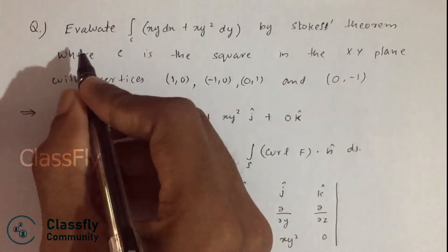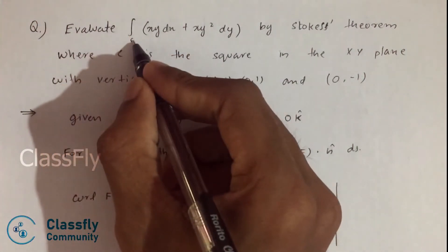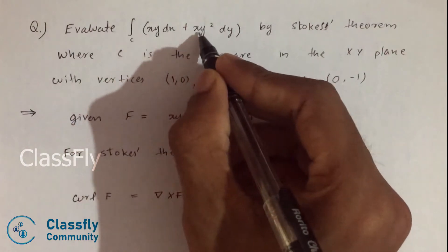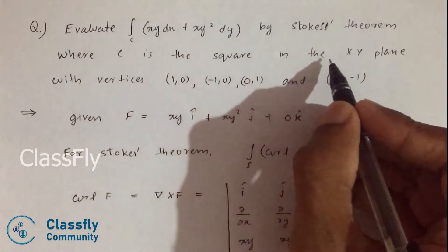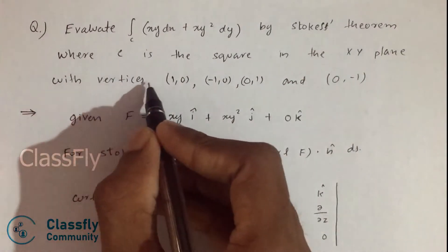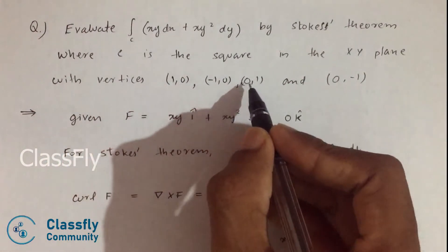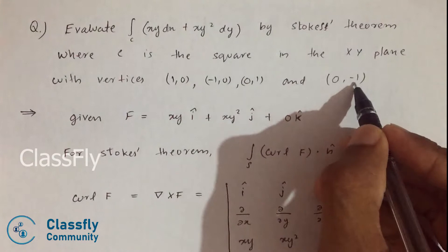In this video we will be solving the question: evaluate integral over c of xy dx plus xy squared dy by Stokes' Theorem, where c is the square in the xy plane with vertices (1,0), (-1,0), (0,1), and (0,-1).